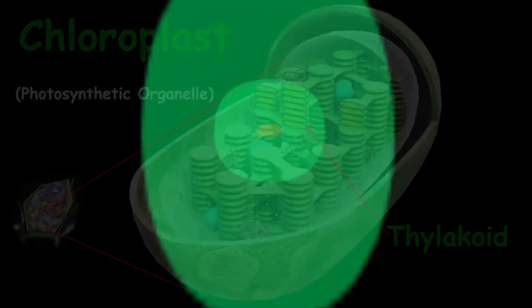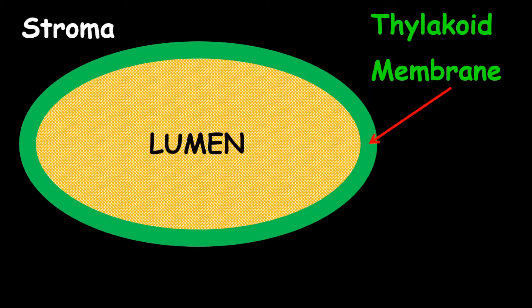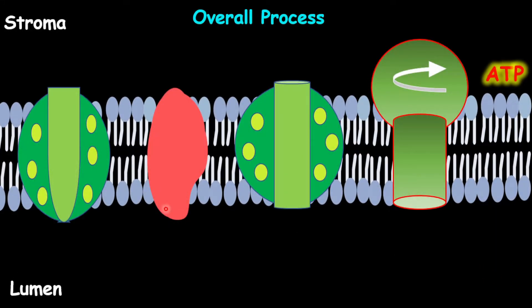Let's take a deeper look into a thylakoid. The thylakoid is surrounded by the stroma, and in the central part of the thylakoid is the lumen. The thylakoid has a membrane, which is a double layer, and the membrane is a specific region where the light-dependent reactions take place. The membrane contains a double layer of phospholipid, hence called a phospholipid bilayer. The phospholipid contains two parts: the head, which is a phosphate group, and the tails, which are fatty acids. Along the membrane, you will find specialized proteins that are very important for the reactions to take place.